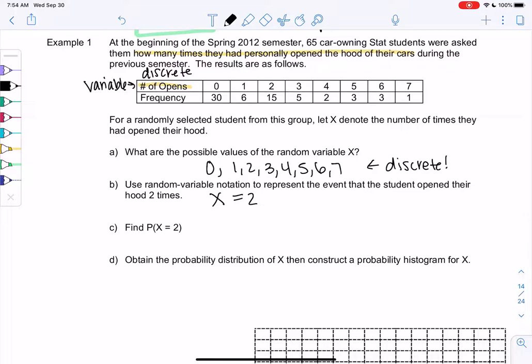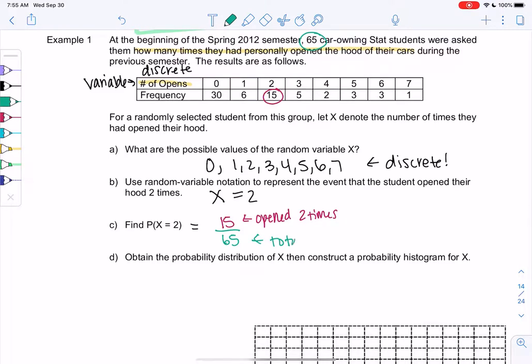So let's find the probability that they opened the hood two times. That's what this says right here. So how many total students were there? 65. How many of them opened two times? 15. Open two times out of the total. And if we do 15 divided by 65, we get 0.2308. So it's very, very similar to relative frequency. It basically is the same thing.